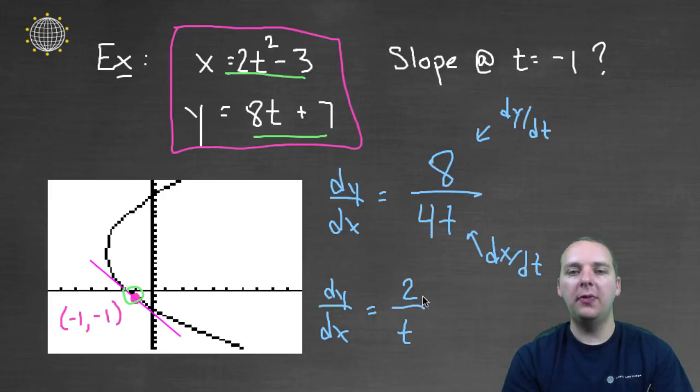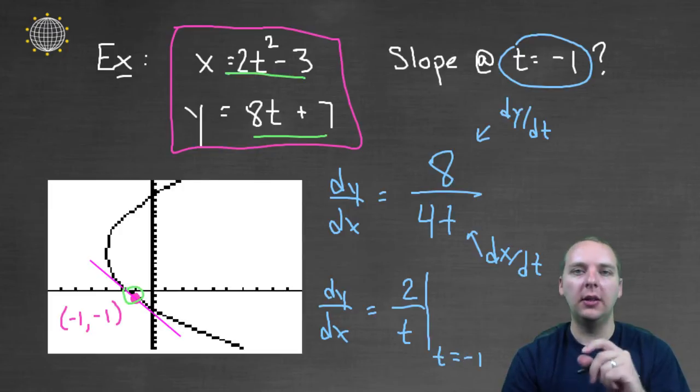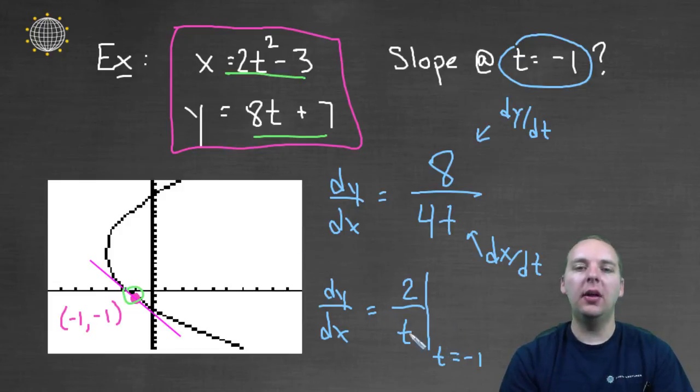And you're probably familiar with this notation. If you want to evaluate the slope at a particular point, you can draw a vertical line and then put t equals negative 1 in the lower right hand corner. And that means we're going to take this derivative and plug in negative 1. And when we do, we see we get a value of negative 2.